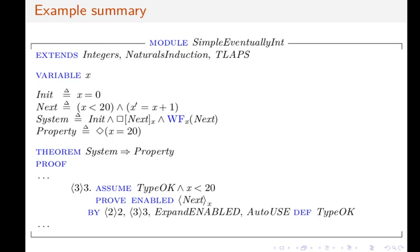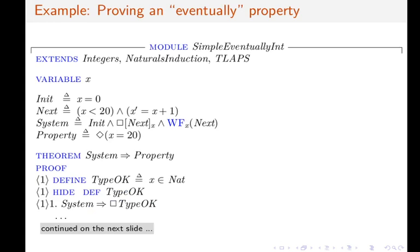Here's the example that we started with, now with part of the proof. This is a step of the proof where we use the new functionality, in particular expand ENABLED and AutoUSE. We wouldn't have been able to prove this step without expand ENABLED. And this is what the new functionality allows us to do.